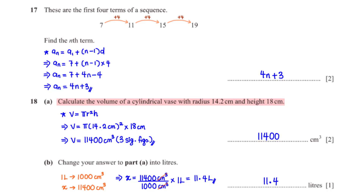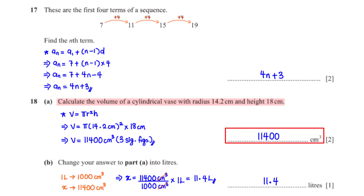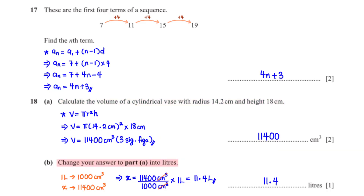Calculate the volume of a cylindrical vase with radius 14.2 cm and height 18 cm. Using the formula V = πr²h, with r = 14.2 cm and h = 18 cm, when we type this into the calculator we get 11,400 cm³ rounded to three significant figures.